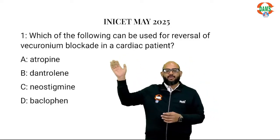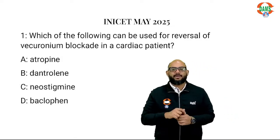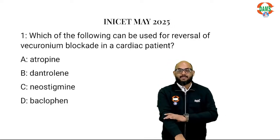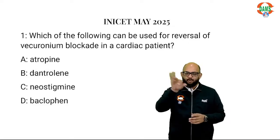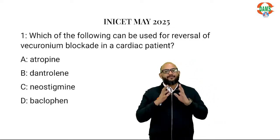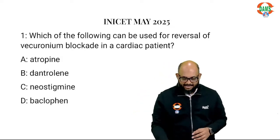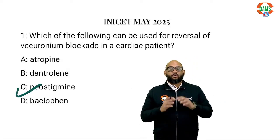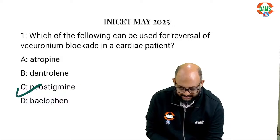The first question was: which of the following can be used for the reversal of vecuronium blockade in a cardiac patient? Most of you wanted to see the word Sugammadex because that is something we have discussed a lot — that Sugammadex will be asked because it recently got approved. But INI people played a googly with us. They knew you were going to be looking for Sugammadex, so they did not give Sugammadex — only for you to realize that what we have been using and reading for years is what is asked in the exam, which is neostigmine. Why is neostigmine such a good drug for reversal of neuromuscular block, especially in NDMRs?